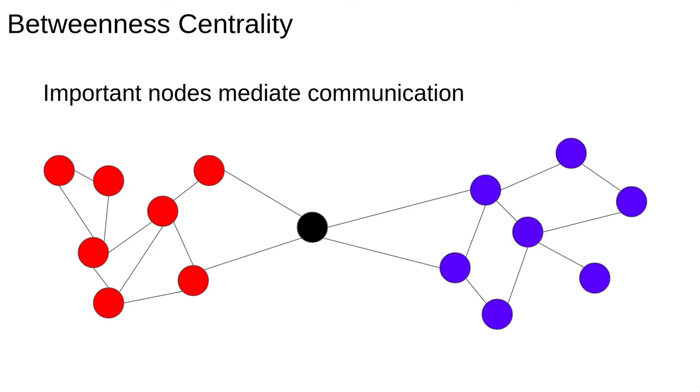In this example all communication between the red and the blue nodes has to pass through the black node as it propagates on the network. Betweenness centrality is a measure which quantifies this giving a high score to nodes like the black one.